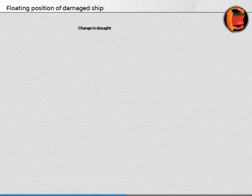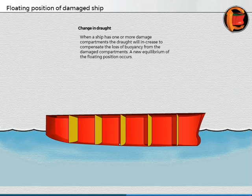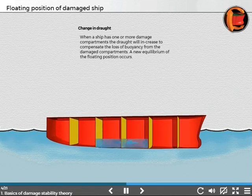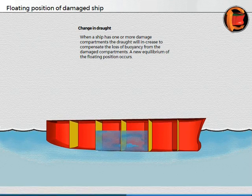Change in draft. When a ship has one or more damaged compartments, the draft will increase to compensate for the loss of buoyancy. A new equilibrium of the floating position occurs.